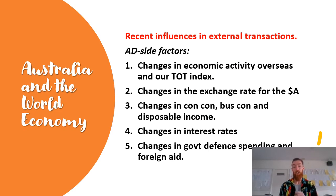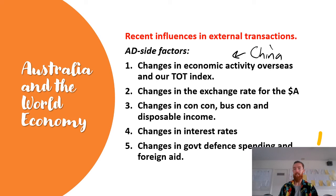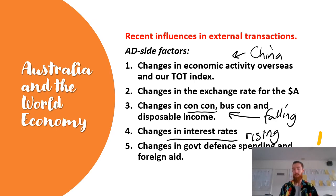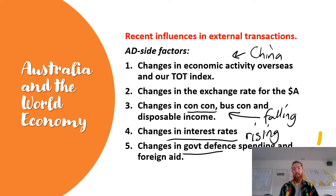There are also some recent aggregate demand and aggregate supply factors that have impacted our external transactions. On the AD side: changes in economic activity overseas and our terms of trade index — specifically China buying our commodity exports. Changes in the exchange rate, changes in consumer confidence, business confidence, and disposable income — all of these are currently falling as people are worried about the future, which may have negative impacts on some external transactions but positive impacts on the current account balance. Interest rates are continuing to rise, which will bring in more foreign investment if our rates increase relative to overseas trading partners. Also, changes in government defence spending and foreign aid — foreign aid being a debit going out — can have large impacts.